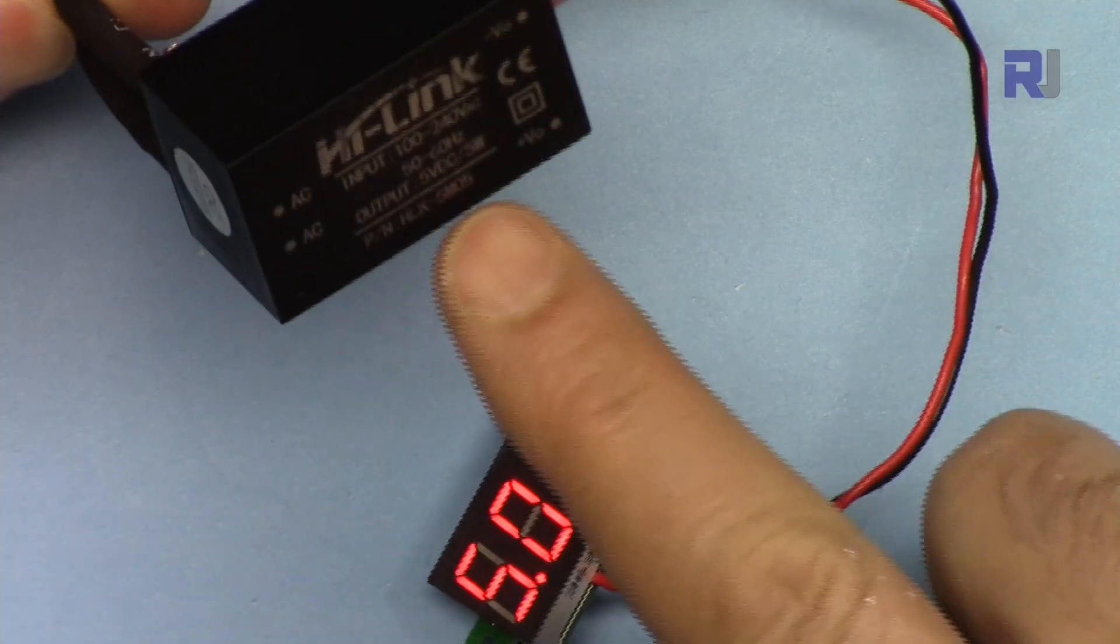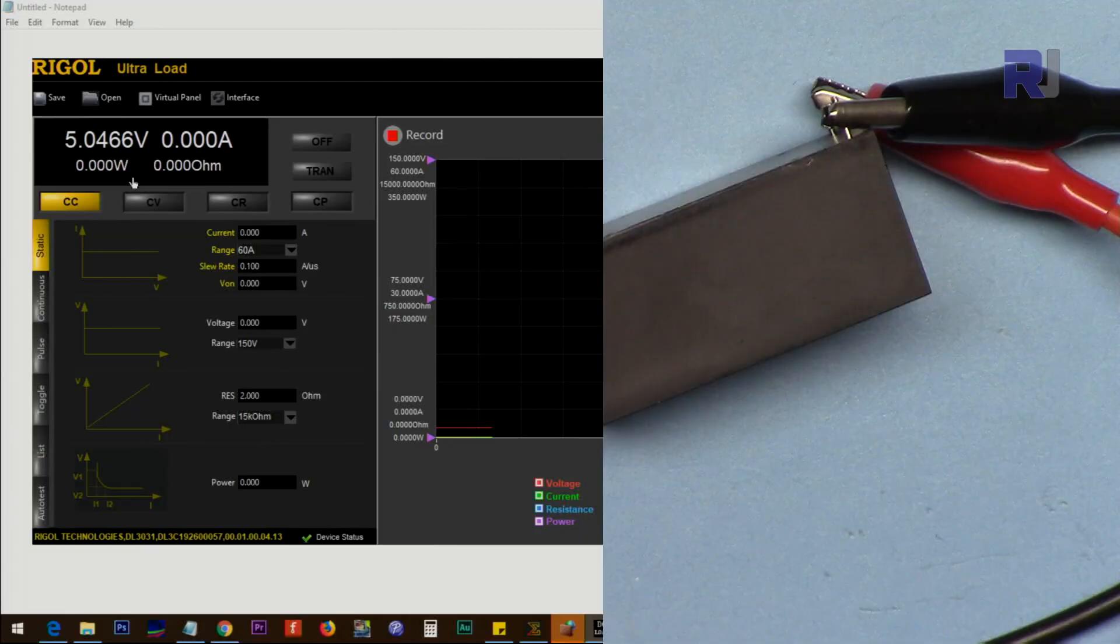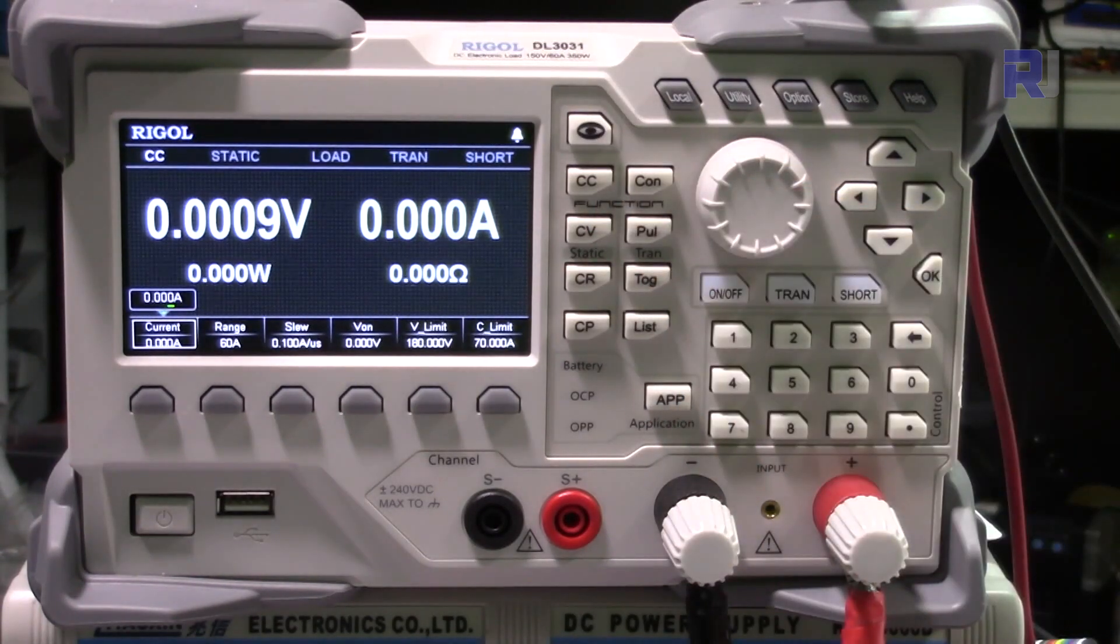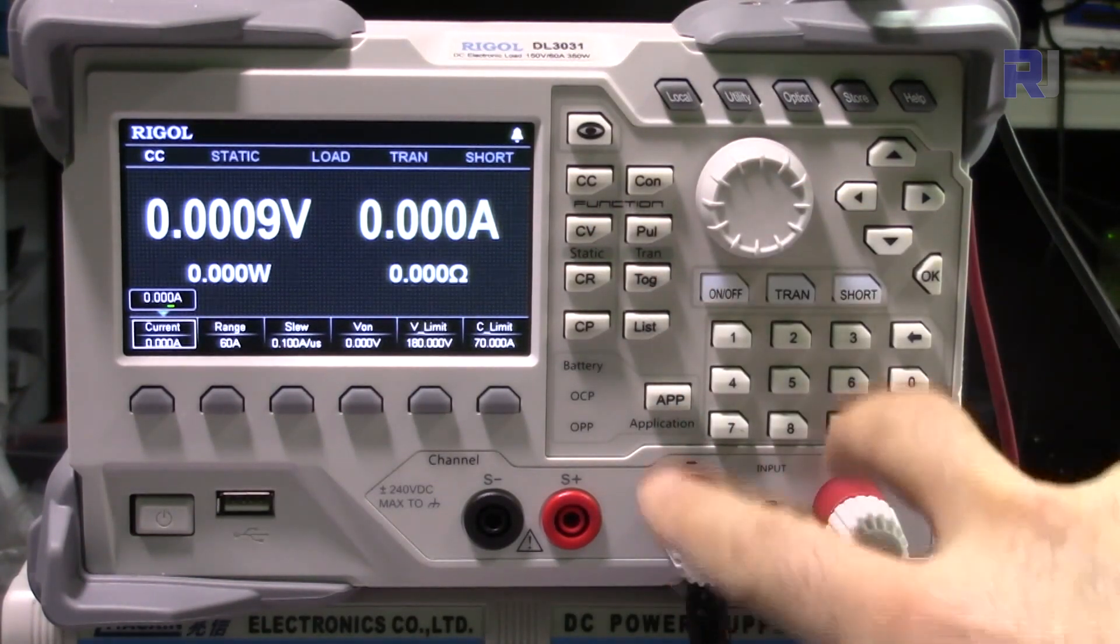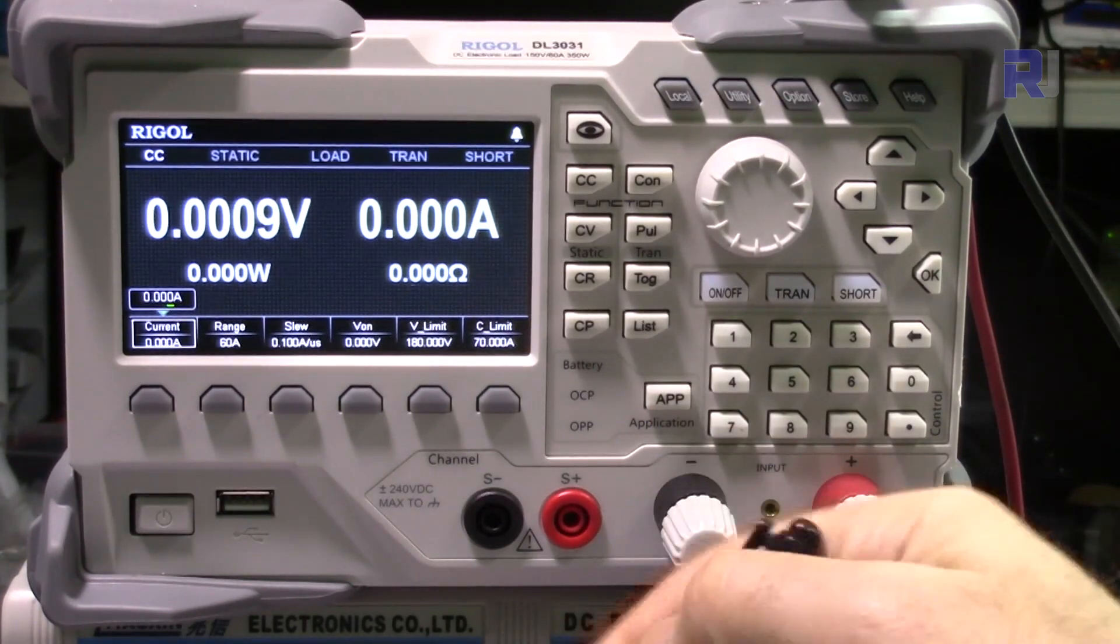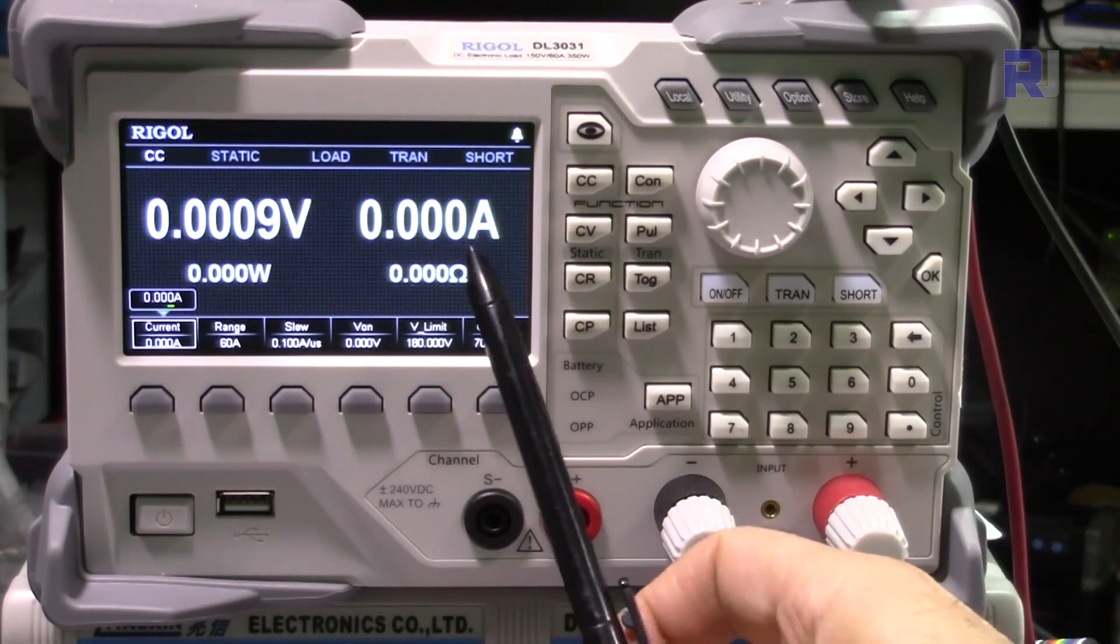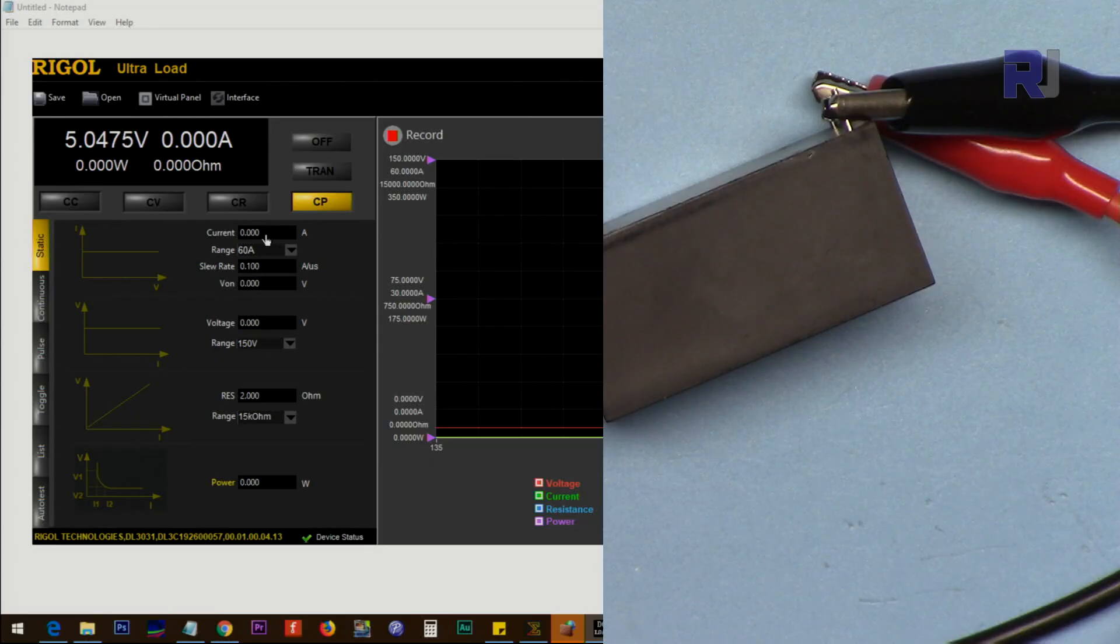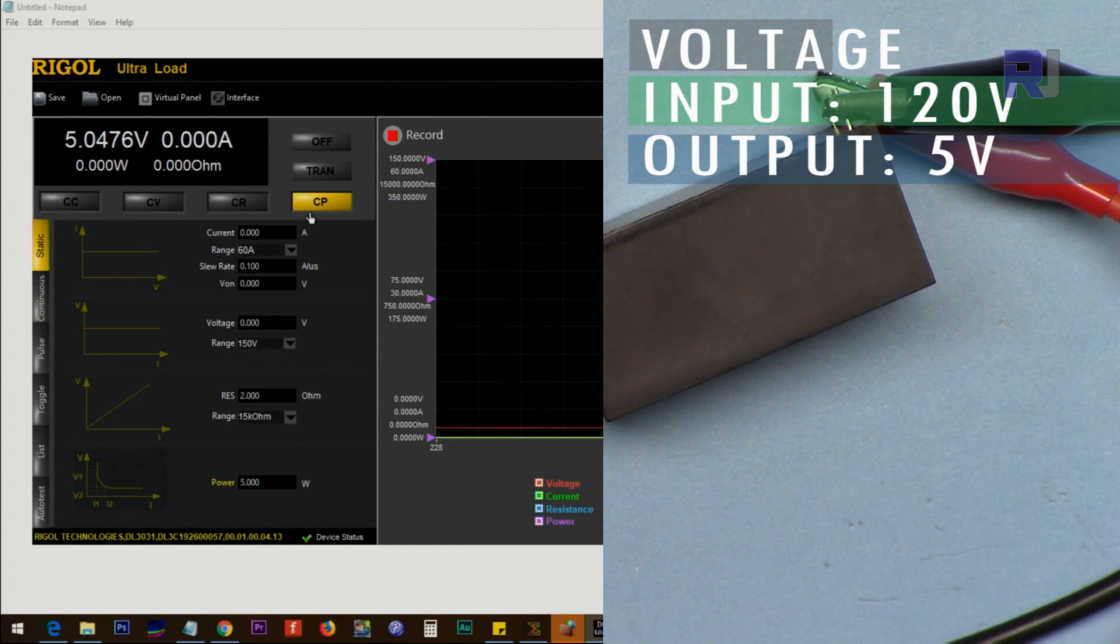This is connected to my electronic load via these two wires. Here is the voltage output from this shown here. This is the electronic load DL3031, and these are the two terminals that from the circuit will be connected in here. I'm going to set the power to 5 watts and turn it on.